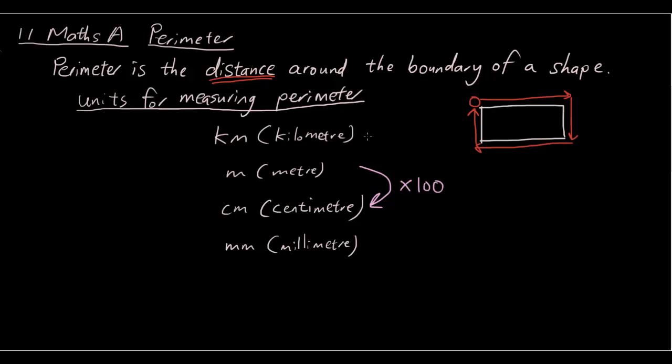So from meters to centimeters, you would multiply by 100. From kilometers to meters, you would multiply by 1000. One kilometer is 1000 meters. And then from centimeter to millimeters, you would multiply by 10.